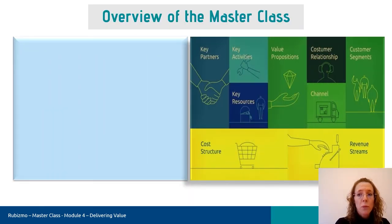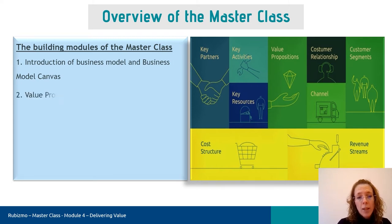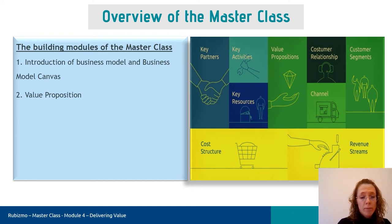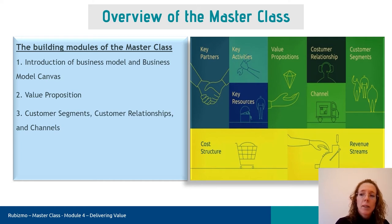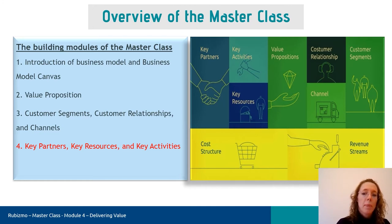The masterclass contains four modules. The first module comprehends business models and introduces the business model canvas. The second module explores the canvas value proposition, while the third handles the right-hand side — in other words, the customer side of the business. The last and fourth module explores the left-hand side of the business model canvas, which is what this video will be about.